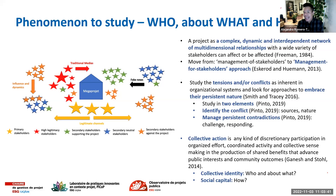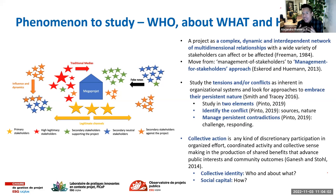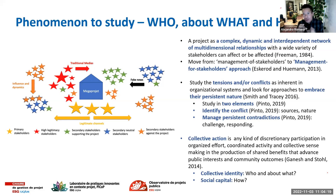To answer these questions, we use different theories. For 'who,' we use stakeholder theory. For 'what,' we use paradox theory to identify points of contradiction and elements of collaboration. For 'how,' we use collective action theory to understand how people develop a collective identity and interest group, and how they use their opinions and communication to develop social capital.